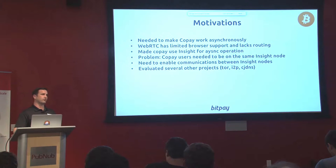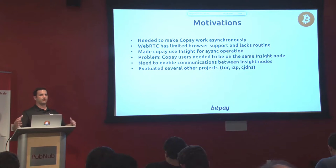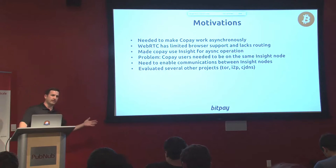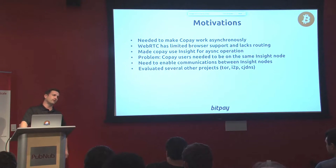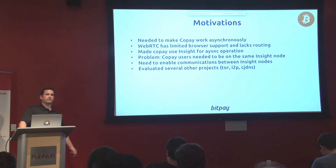Copay is a multi-signature wallet. You can create a multi-signature wallet that requires two out of three signatures, or three out of five signatures. So you can have five people get together and store some funds, and then it requires three out of five people to sign to spend those funds. We really want to start employing that multi-signature technology to eliminate Bitcoin theft — we get really tired of hearing about Bitcoins being stolen or lost. You can also create a one-of-one transaction, so you can use Copay like a regular wallet if you want to.